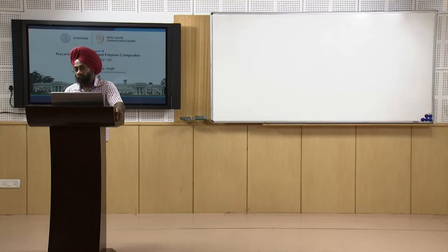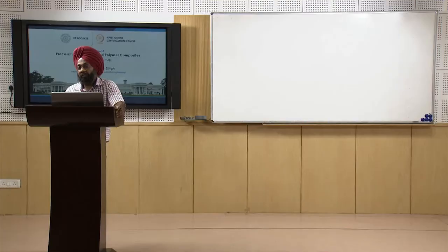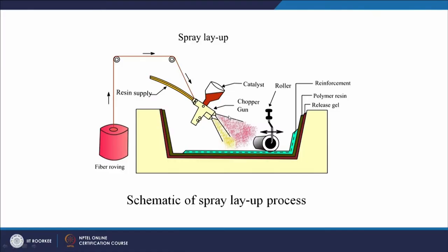Basically three things go as constituents: the polymer, the catalyst or hardener, and the fiber. All three enter the chopper gun. As the name suggests, the chopper gun chops the fibers into small pieces — this process is used for short fiber reinforced polymer composites. The polymer and chopped fibers combine in the gun and the mixture is sprayed on the mold.